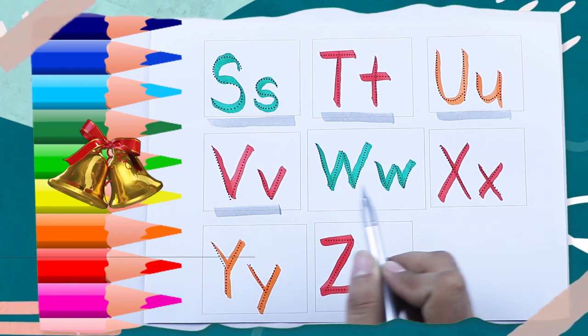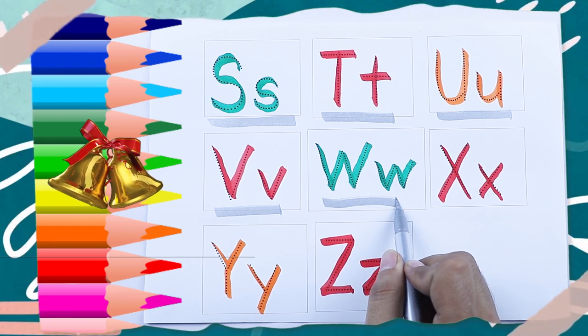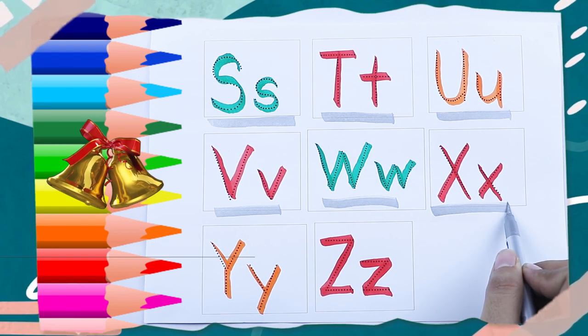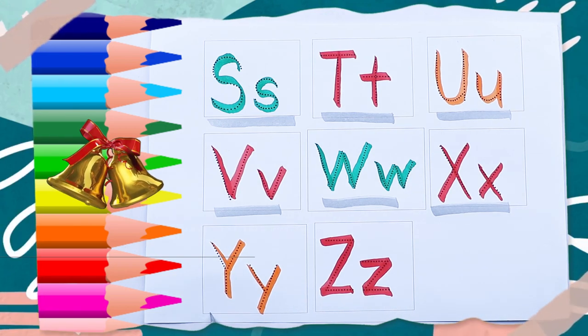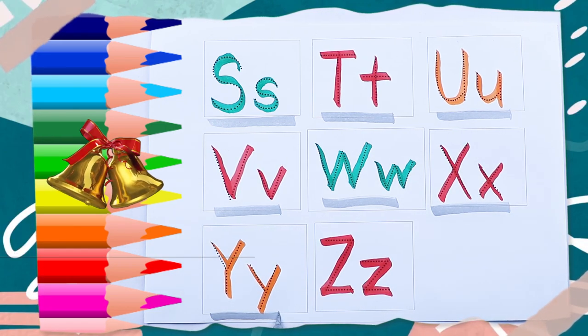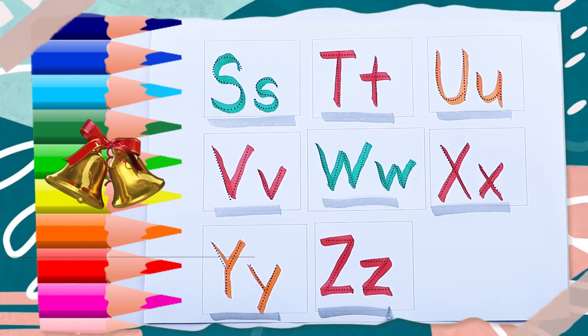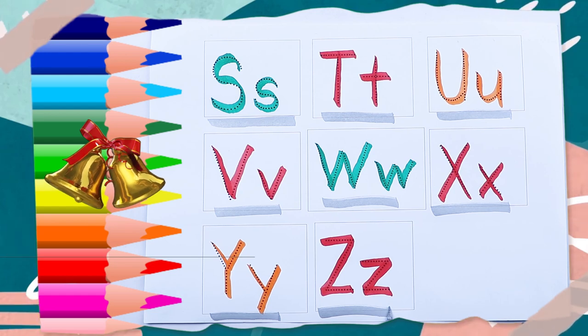V for wand, green color W, W for watch, red color X, X for ax must be, orange color Y, Y for yak, red color Z, Z for zebra. Thank you, bye bye, please like and subscribe.